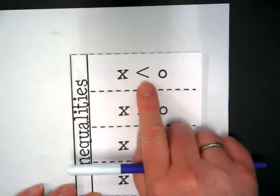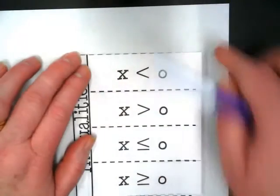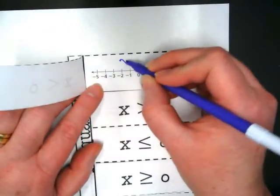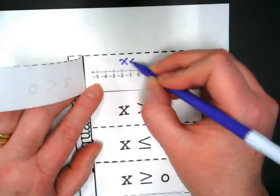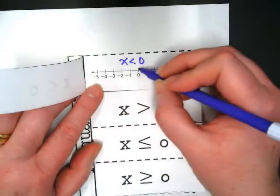Notice what this says x is less than what number? Zero. So we're going to open this up to show x is less than zero. And the first thing I'd like you to do is rewrite it on the inside. x is less than zero. We're going to circle the zero.